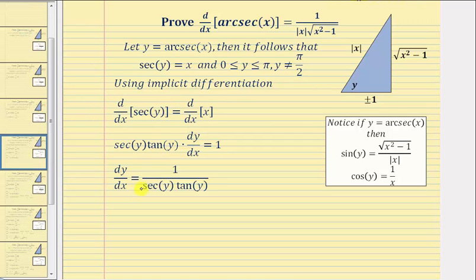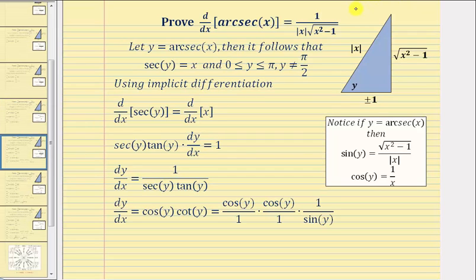So we know dy/dx is equal to one divided by secant y times tangent y. Because one over secant y is equal to cosine y, and one over tangent y is equal to cotangent y, we can write this as dy/dx equals cosine y times cotangent y. And because cotangent y is equal to cosine y divided by sine y, we can write this product as cosine y over one times cosine y over one times one over sine y.